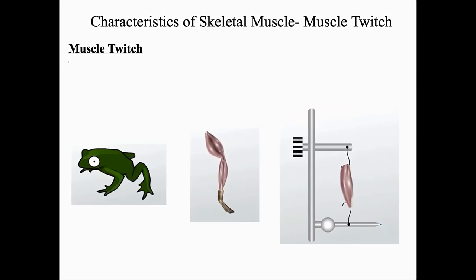Now we're going to look at a muscle contraction from a graphical standpoint. To do this, we skin the leg of a frog, isolate the gastrocnemius or calf muscle, and attach that gastrocnemius to an electrical impulse. When we run an electrical current through that gastrocnemius, what's created is a muscle twitch.